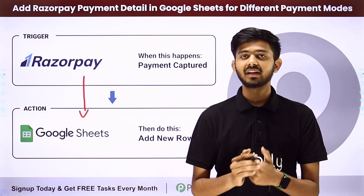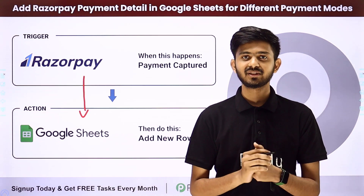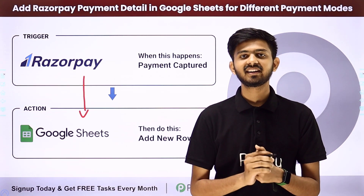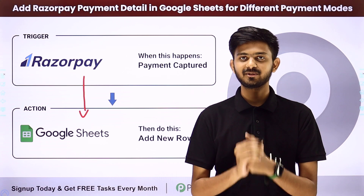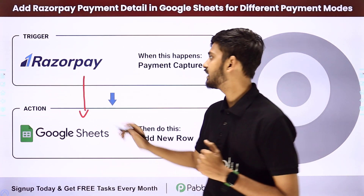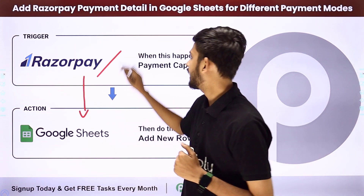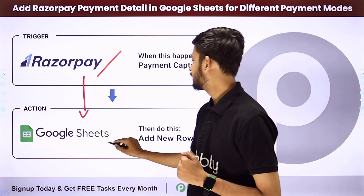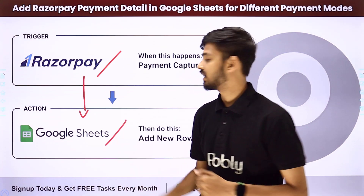PablyConnect is an amazing software for automation and integration. In PablyConnect, we are going to use Triggers and Actions. In the Trigger application, we will be using Razorpay. In the Action application, we will be using Google Sheet.